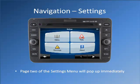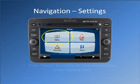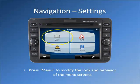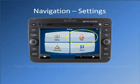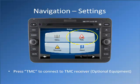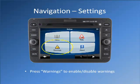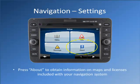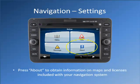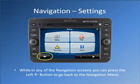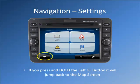Page 2 of the settings menu will pop up immediately. Press Menu to modify the look and behavior of the menu screens. Press TMC to connect to a TMC receiver, optional equipment. Press Warning to enable or disable warnings. Press About to obtain information on maps and licenses included with your navigation system. While in any of the navigation screens, you can press the left arrow button to go back to the navigation menu. If you press and hold the left arrow button, it will jump back to the map screen.